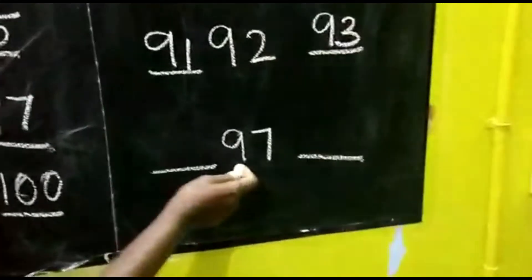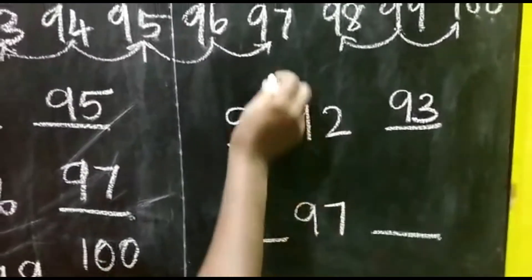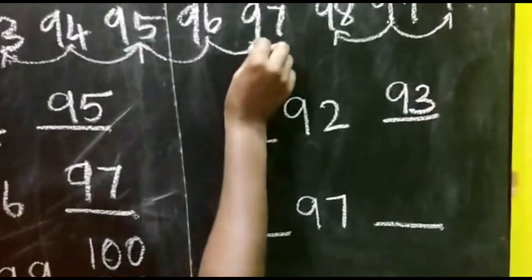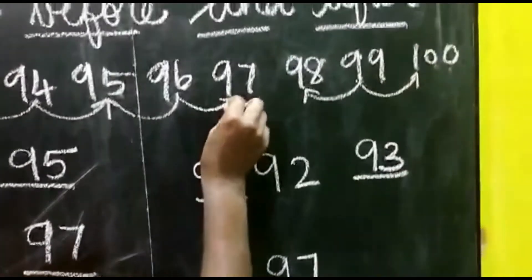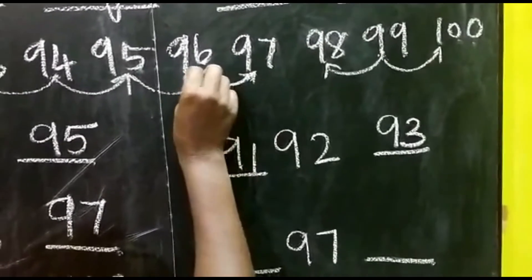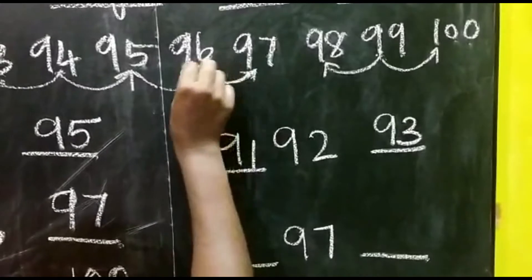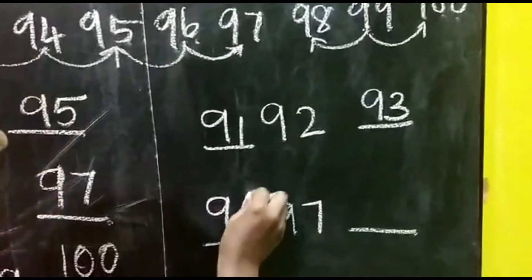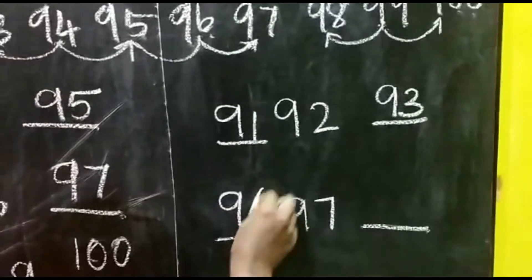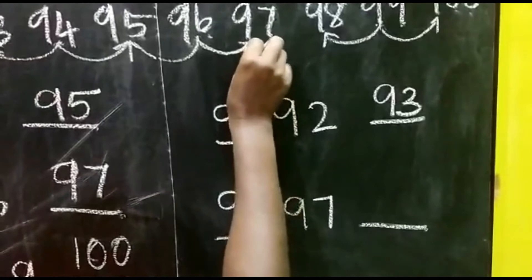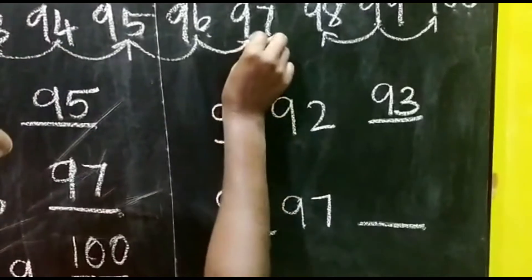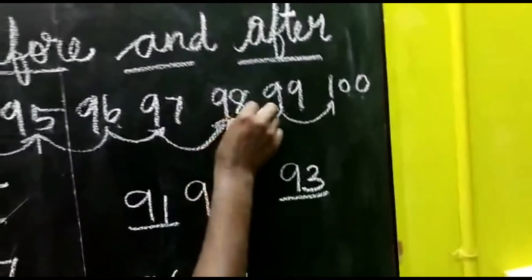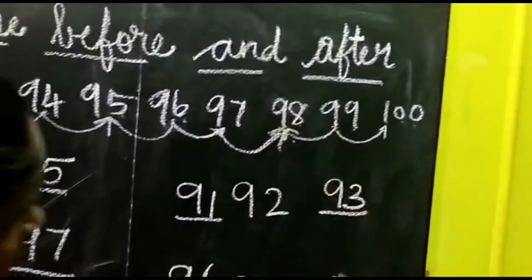The next number is 97. Now 97 before number is 96. 97 after number is 98.